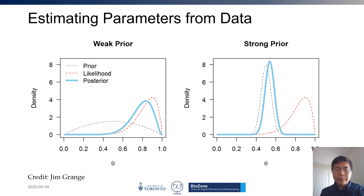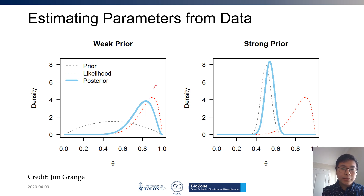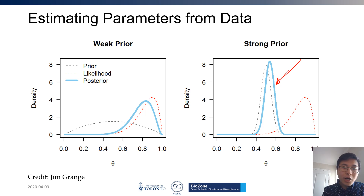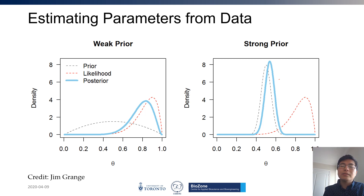Here we see a graphical representation of what weak versus strong prior means. With a weak prior, the likelihood dominates the posterior — our posterior is very close to the evidence or the data we observe. In the case of a strong prior, even though you observed evidence much different than your prior belief, your posterior — your updated belief — isn't that much different than what you previously believed, even though it did shift a bit toward the evidence.